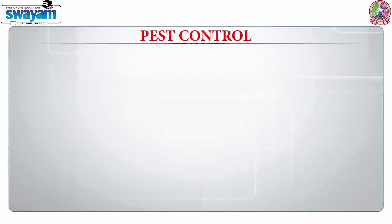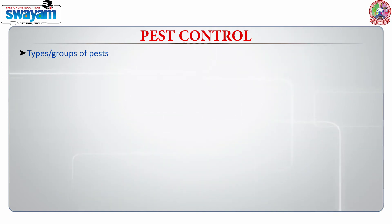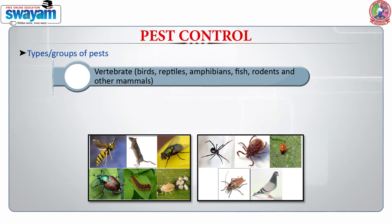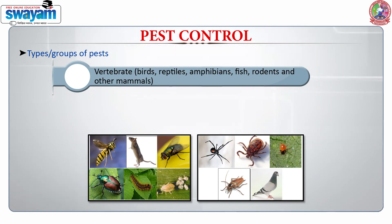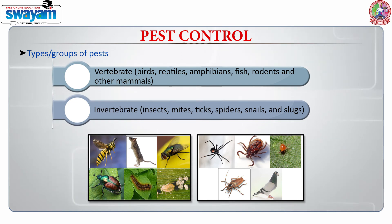There are various groups of pests which can be found in food service establishments. These can be birds, reptiles, amphibians, sometimes fishes, rodents, and other small mammals. We can also have insects, mites, ticks, spiders, snails, and slugs.